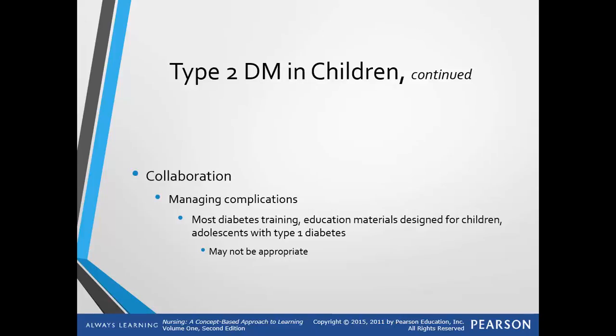Continuing with collaboration and managing complications: most diabetic training and education materials are designed for children and adolescents with type 1 diabetes, emphasizing insulin and glucose monitoring, so they may not be appropriate for kids with type 2 diabetes. The American Academy of Pediatrics presents recommendations for complications of hypertension, dyslipidemia, retinopathy, microalbuminuria in the urine, and depression.